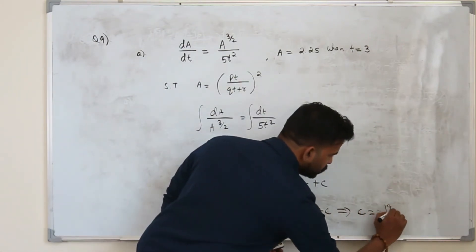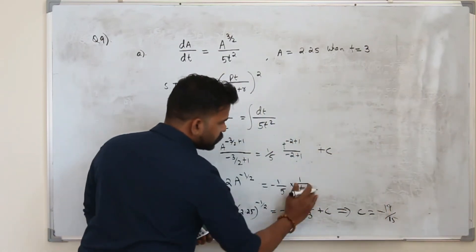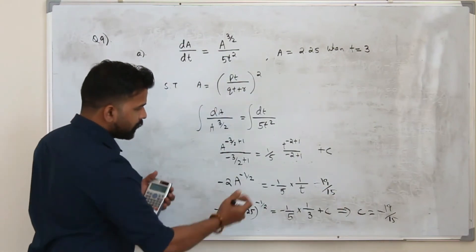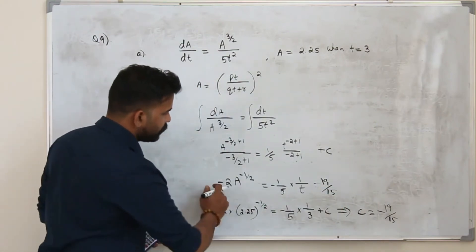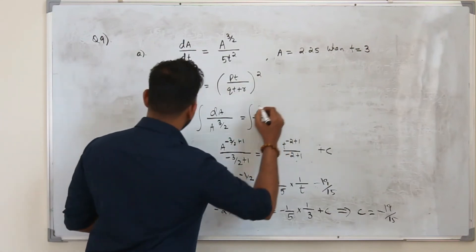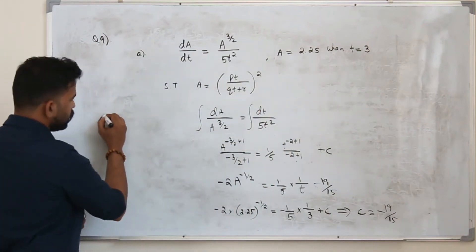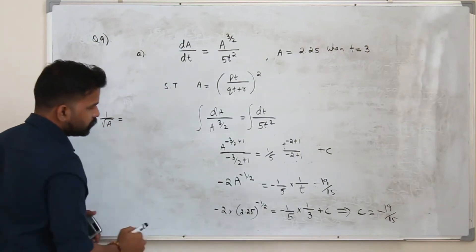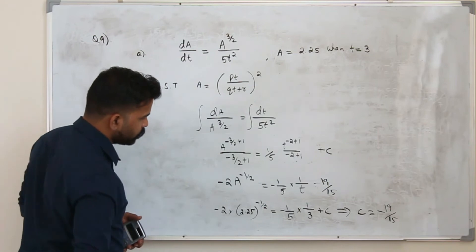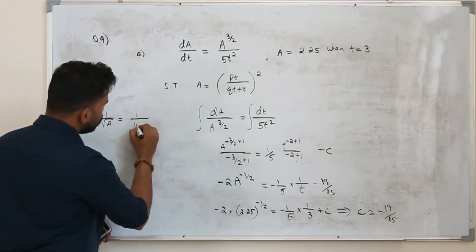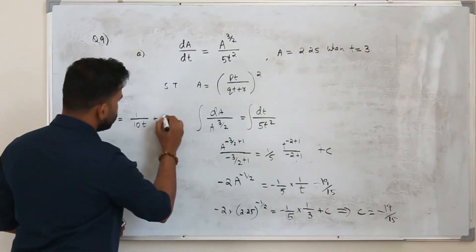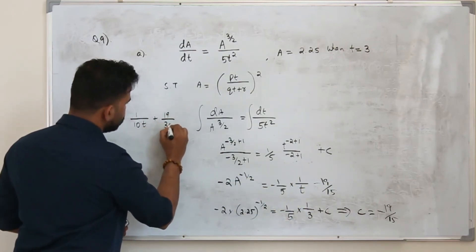Substitute this c back in here and make a as a subject. So substituting minus 19 over 50. Now make a as a subject. So divide everything by minus 2. So you get a to the power minus half or you can write it as 1 by square root of a. When you divide everything by minus 2, this is 1 upon 10t and this will become positive 19 upon 30.